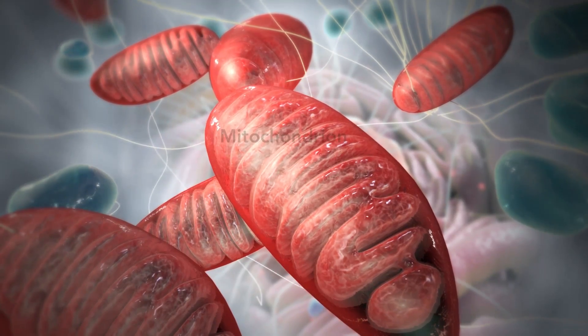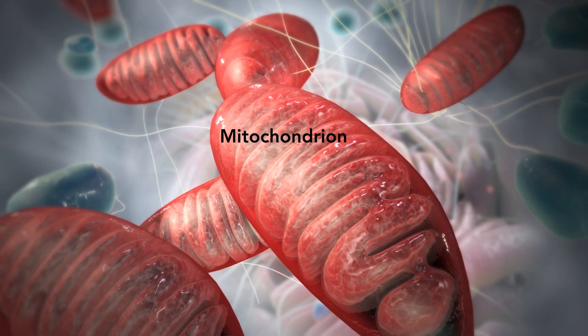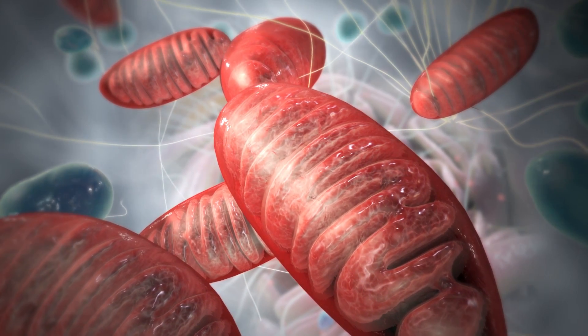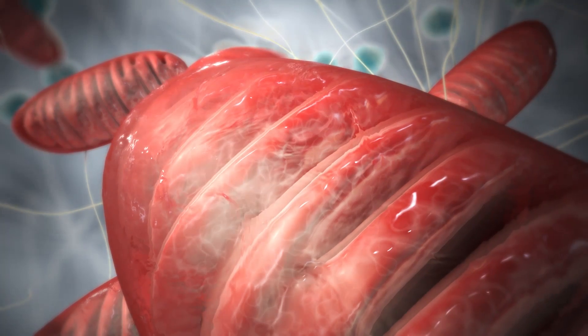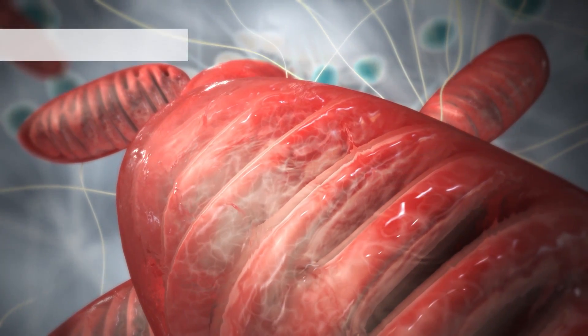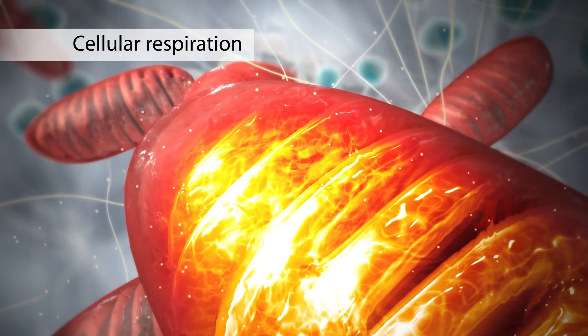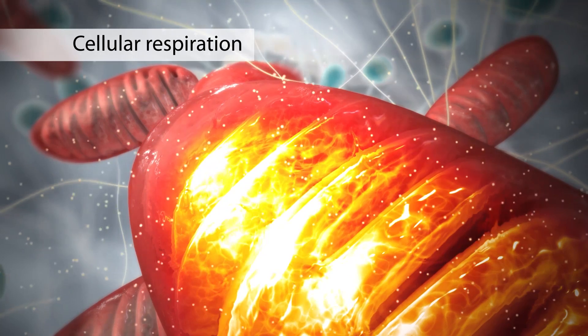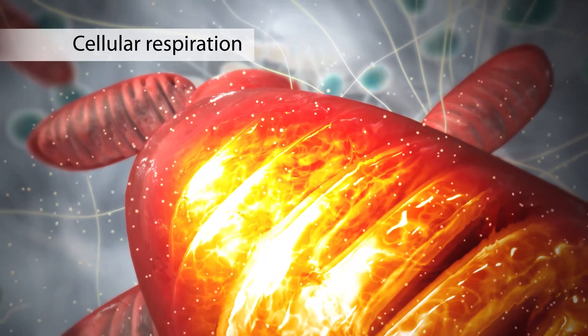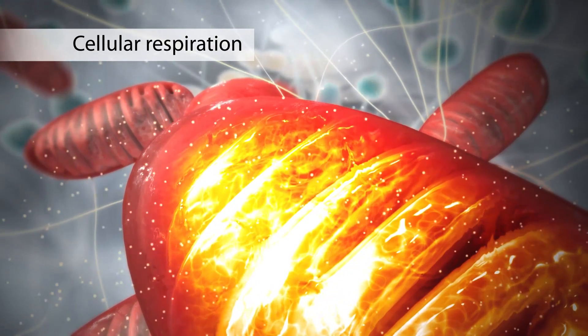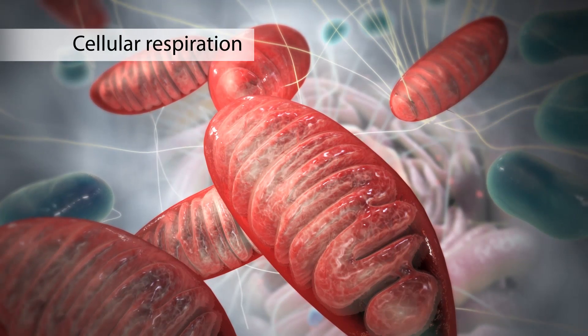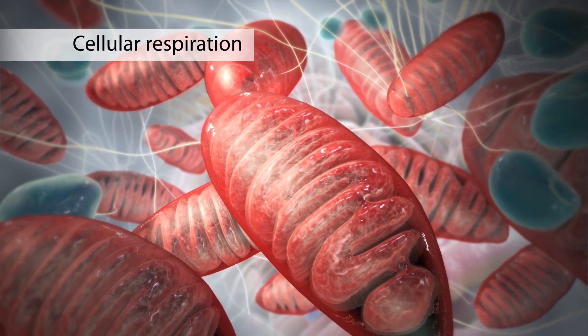The mitochondrion is an organelle that is the powerhouse for both animal and plant cells. During a process called cellular respiration, the mitochondria make ATP molecules that provide the energy for all of the cell's activities. Cells that need more energy have more mitochondria.